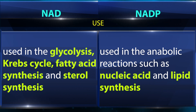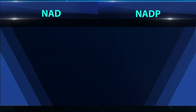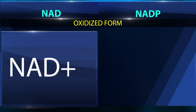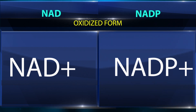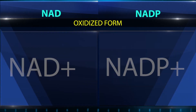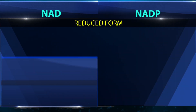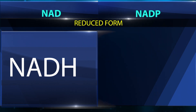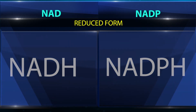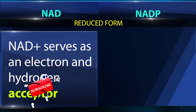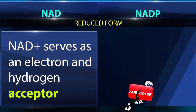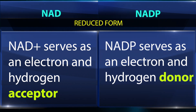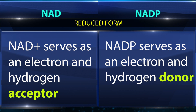The oxidized form of NAD is NAD+, and the oxidized form of NADP is NADP+. The reduced form of NAD is NADH, and the reduced form of NADP is NADPH. NAD+ serves as an electron and hydrogen acceptor, while NADP serves as an electron and hydrogen donor.